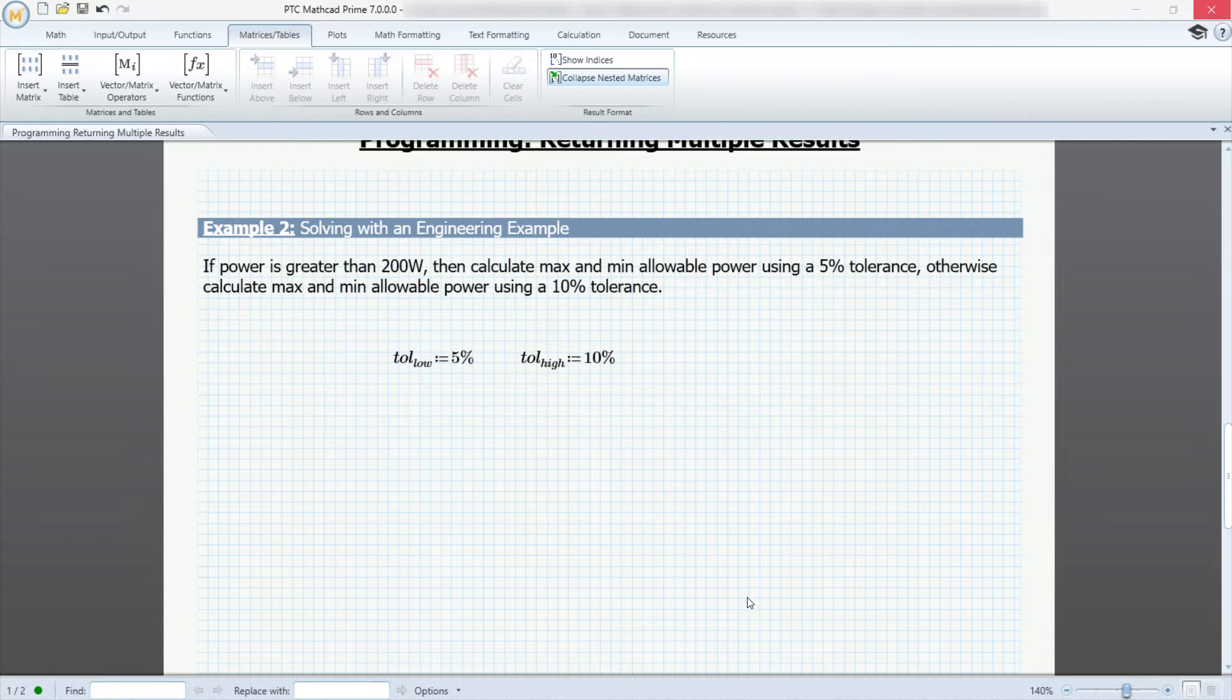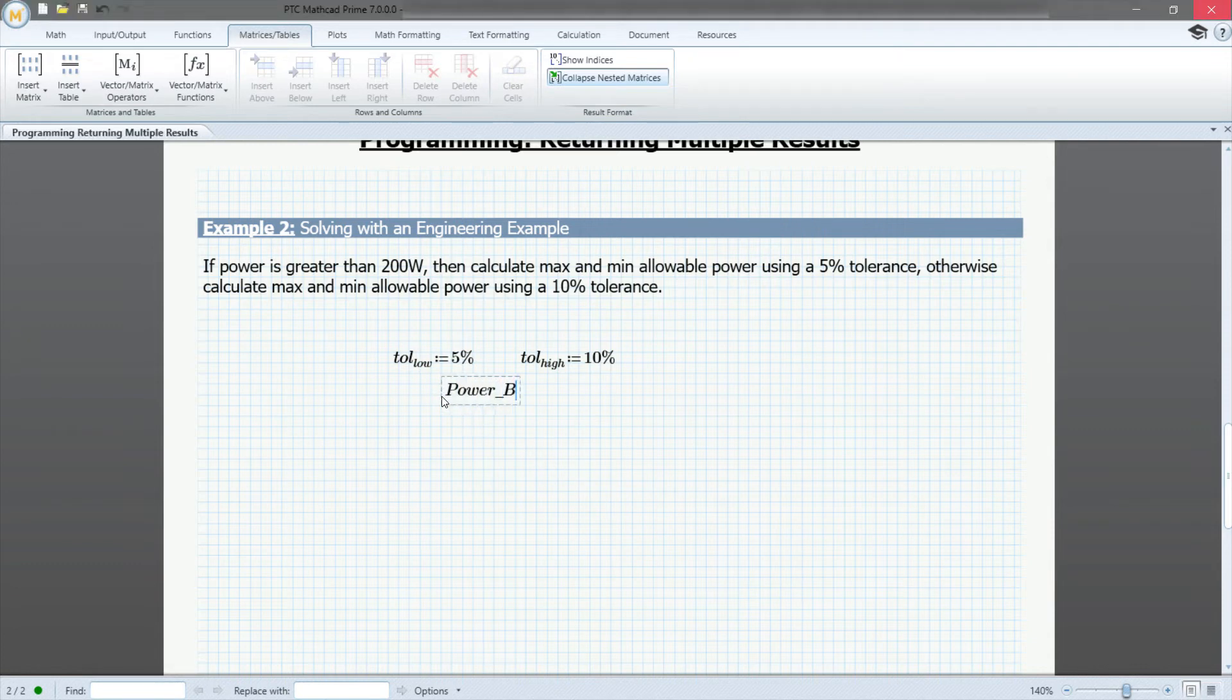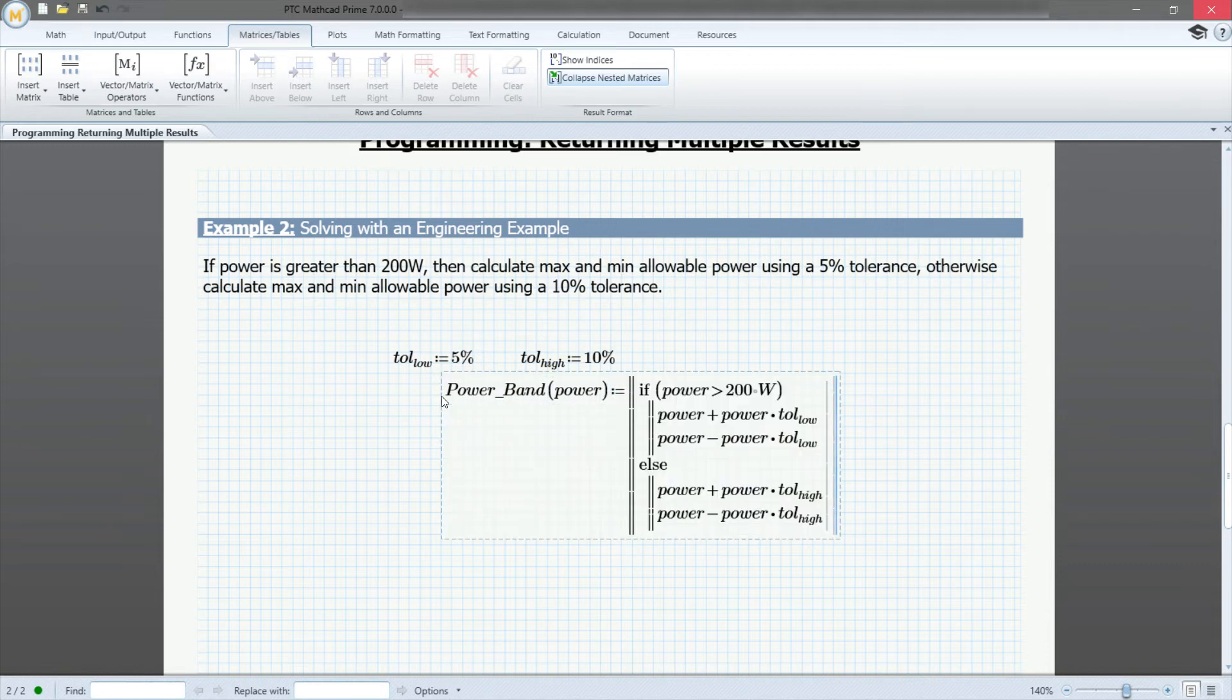We will define the function as power band of power and set it equal to a programmed structure including an if-else statement. Again, to return both the maximum and minimum values, we want to include a matrix at the bottom of the program structure.